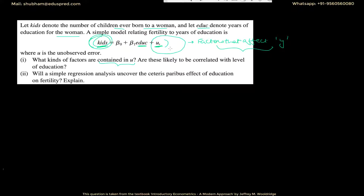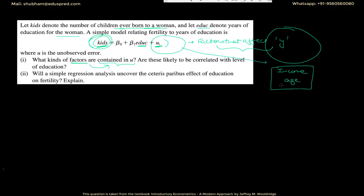We need to think of factors that affect the number of children ever born to a woman. For example, it could be the income that the woman is earning, or it could also be her age. There could be many such factors; I'm just writing two here — income and age of the woman.